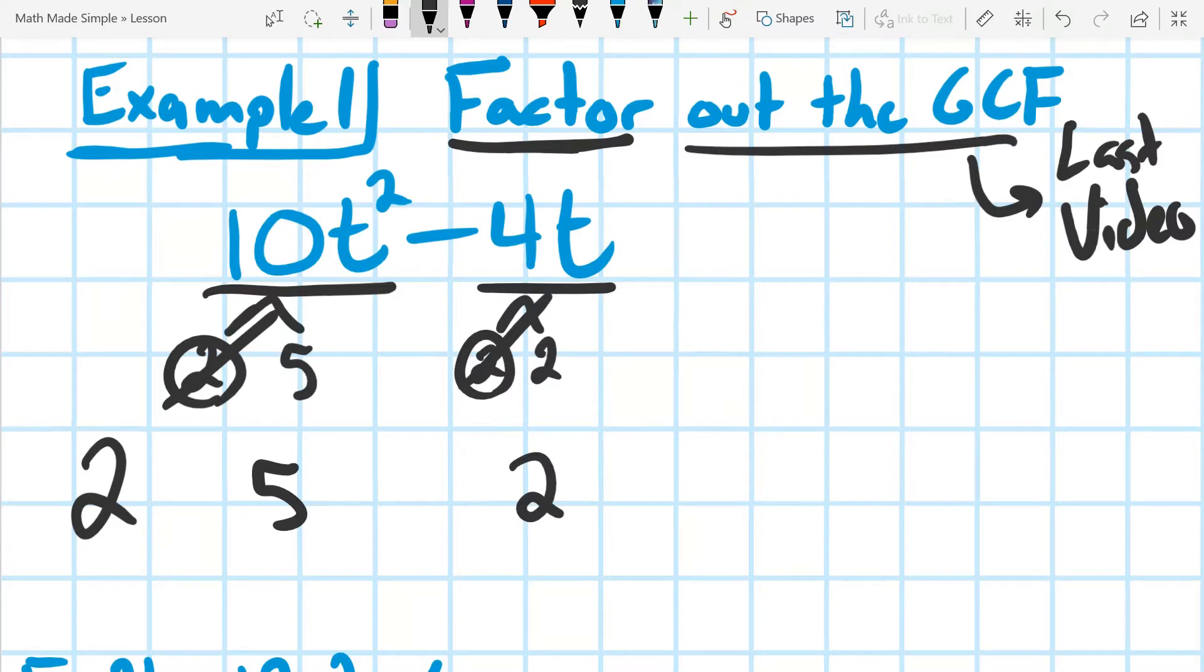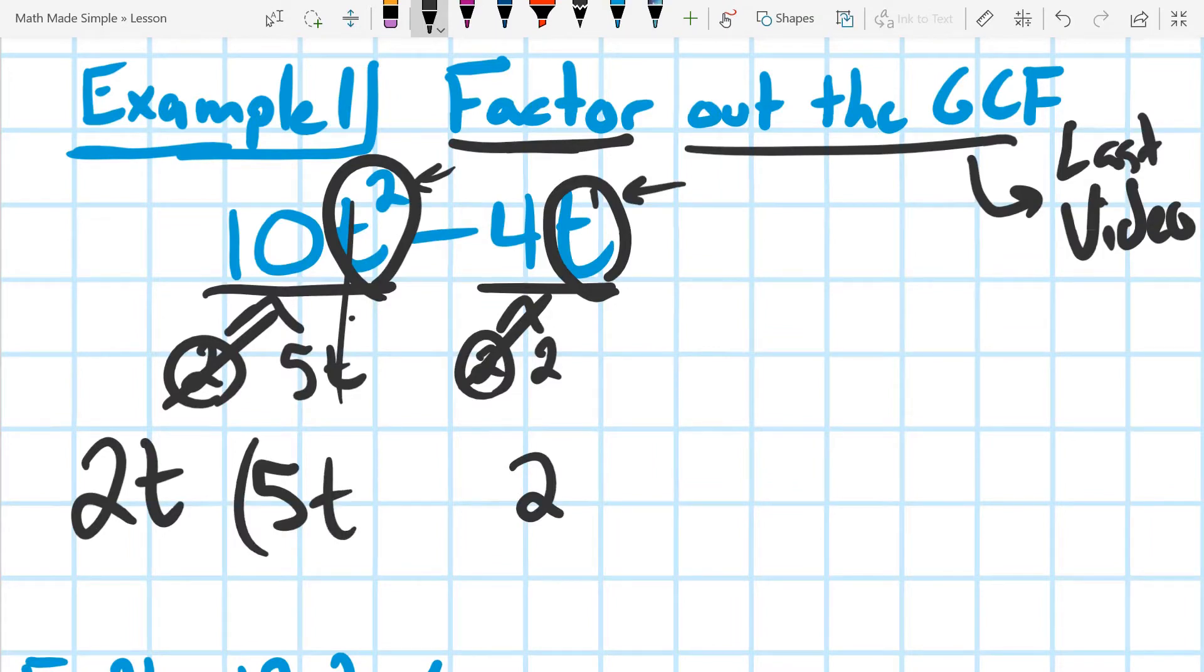The next thing we're going to look at is they both have a t in them, so I know I can take out a t. The catch is that there's only one t in this one, and then in this one over here, there's two of them. So even after I take one t out, I'm still going to be left with a t with that 5. And I want you to notice this was a minus, so I'm going to keep it minus.